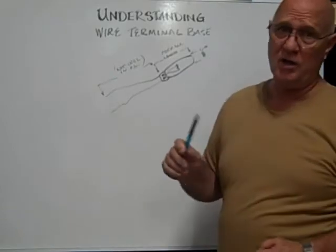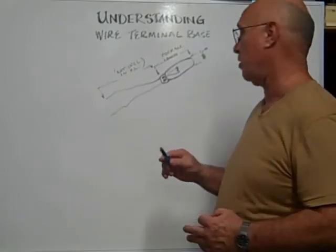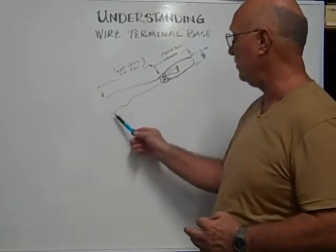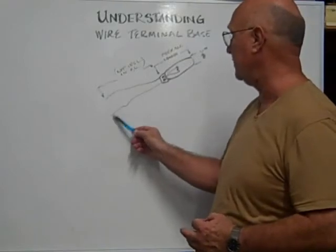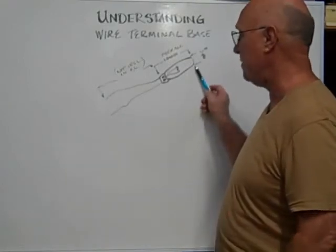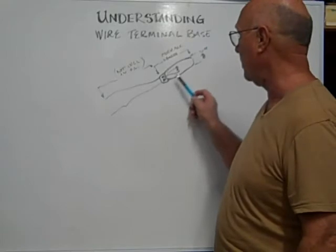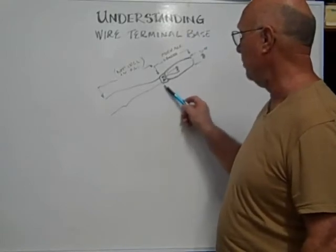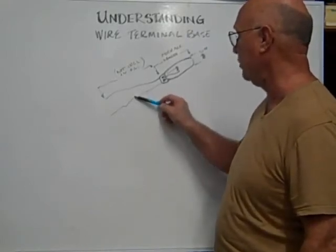In determining the overall length of a wire terminal base bulb, you do not measure from the end of the wires to the top of the bulb. You only measure the glass part of the bulb. That is the overall length of the bulb. The wires are not included.